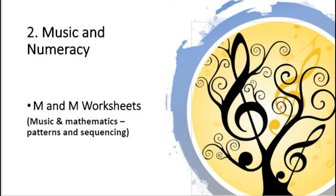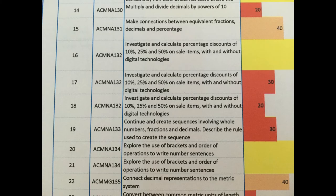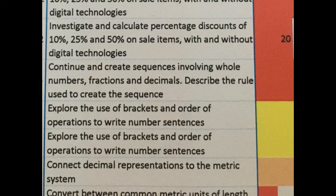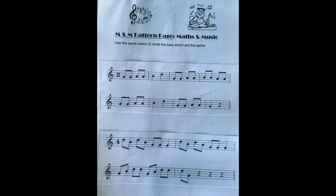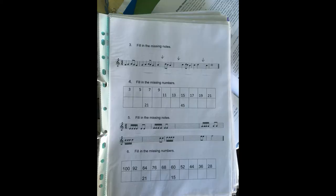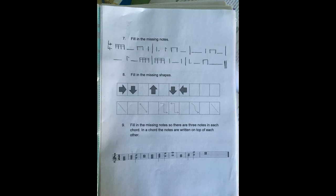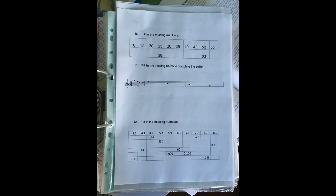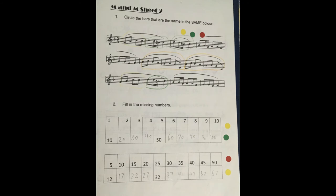The classroom teacher collected results from students' online mathematics testing to determine where their weaknesses were. The data was represented by a coding system of three colours — red for areas of significant weakness. The data revealed that one area in the red category was sequences and patterning. To address this I created M&M worksheets which used music and mathematics to show patterns. In this way numeracy was embedded across two subjects, and connections were strengthened by showing how patterns could be expressed using different semiotic systems — through numbers and through music notation. Students' enthusiasm and accuracy in completing these worksheets reflected their engagement and improved understanding. For an added bit of fun, correct answers on the worksheets were given coloured dots to represent M&Ms.